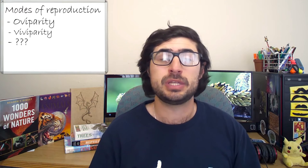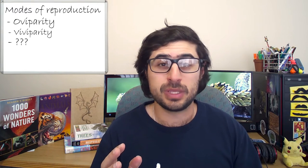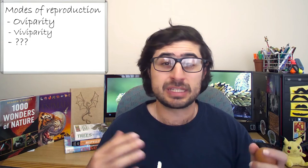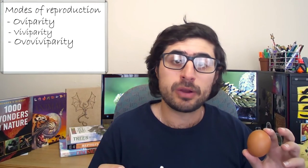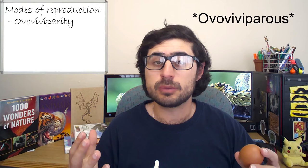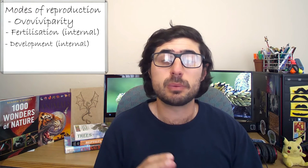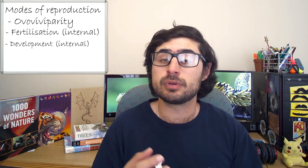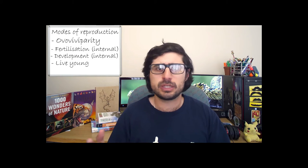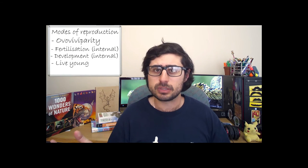But of course, this is nature, which means that nothing is ever as black and white as it should be, and there are always surprises and exceptions to every rule. And this is one of them. This is called ovovivipary, or ovoviviparity, and it is almost a halfway point — or rather more like a bridge — between oviparity and viviparity.